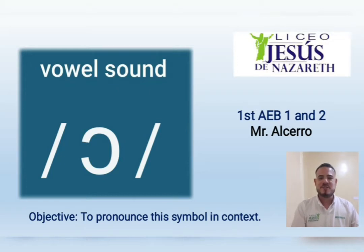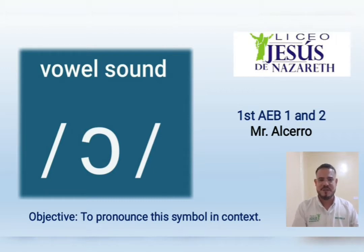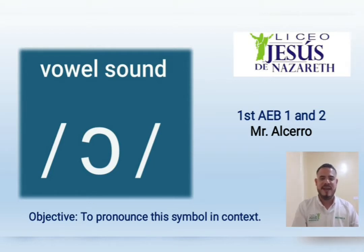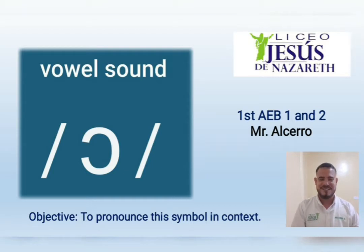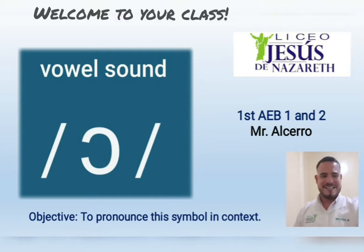Welcome to your English 1 class, people from First Bilingual 1 and 2. This is Mr. Acero speaking to you. Today the vowel sound is the inverted C, vowel sound of the IPA sounds of phonics in English. Remember, the objective is to pronounce this symbol in context. Welcome to the class.